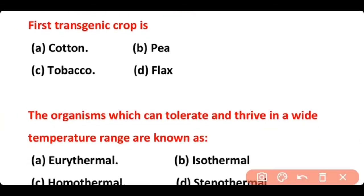The first transgenic crop is: cotton, tobacco, or flax. The correct answer is option C. Tobacco is the first transgenic crop.